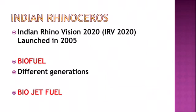Second generation biofuels use non-food crops and feedstock such as Jatropha, wood, grass, seed crops, and organic waste. Third generation biofuels use specifically engineered algae whose biomass is converted into biofuels. Fourth generation biofuels aim not only to produce sustainable energy but also to capture and store CO2. In summary: first generation uses food crops, second uses non-food crops, third uses algae, and fourth generation captures and stores CO2 for use as fuel.